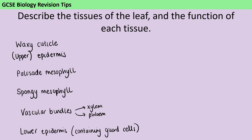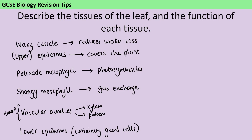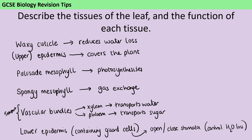Thinking about the function of each part: the waxy cuticle isn't actually a tissue because it's not made of cells, but it's there to prevent water loss — stopping water from evaporating from the upper surface of the leaf. The epidermis acts like a skin covering the whole leaf. The palisade mesophyll is where the majority of photosynthesis happens, and the spongy mesophyll allows gas exchange to occur. The vascular bundles are there for transport — the xylem transports water and minerals, and the phloem transports sugar.